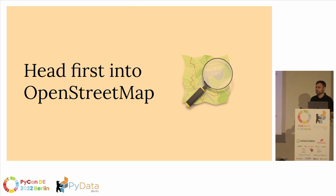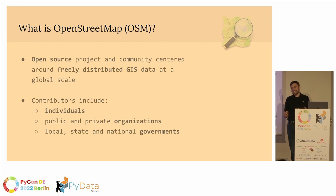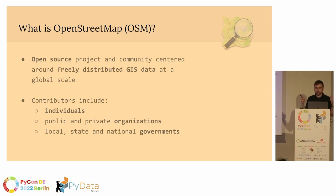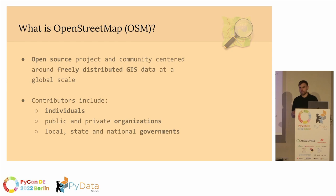Let's dive headfirst into OpenStreetMap and talk about what it is. OpenStreetMap is actually a huge community — not only is it a community, but it's a community of communities. All around the world, you have local chapters dedicated to basically mapping out their communities and making this data open source and freely available to everyone. Contributors include individuals like you and I, but also public and private organizations, as well as local, state, and national governments. If you go to the Wikipedia page, the list of contributors is actually mind-blowing.